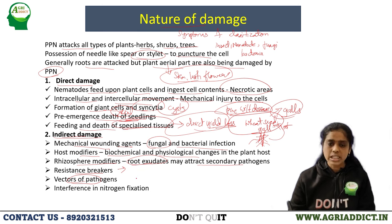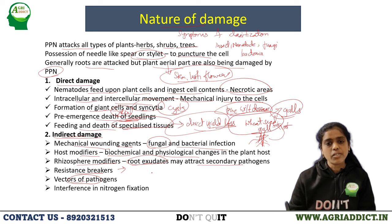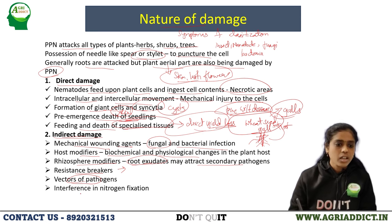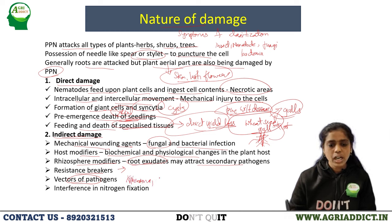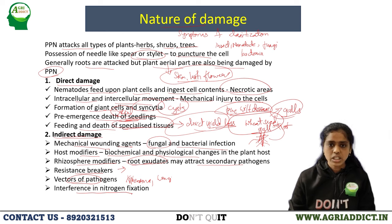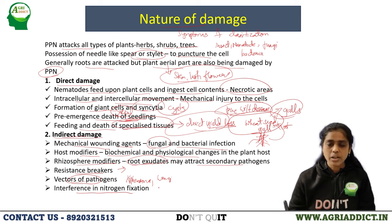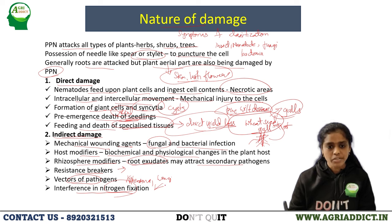Nematodes are also excellent carriers of viruses on their body and transmit viral diseases from one plant to another plant. Examples are Xiphinema, Longidorus, Trichodorus, and Paratrichodorus. Regarding interference in nitrogen fixation: in legume crops, nodules in the root system help in nitrogen fixation. If a nematode attacks the root system, it causes impaired growth of the root system, and fixation of nitrogen is also affected by reducing the size and number of nodules.